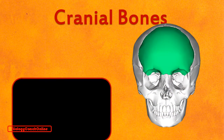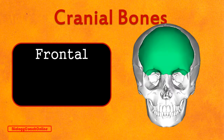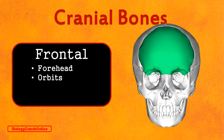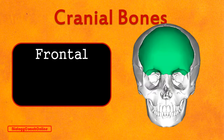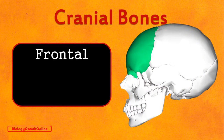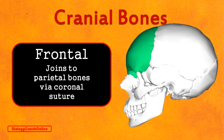The frontal bone, seen here in green, is a large, prominent bone at the front of the skull. It's a single bone that forms the forehead and the brow ridge, including the upper parts of the orbits of the eyes. Don't forget the landmarks of the supraorbital foramina. Looking at the lateral aspect, we can clearly see the coronal suture that joins the frontal bone to the parietal bones. The coronal suture is so called because it crosses the crown of the head.